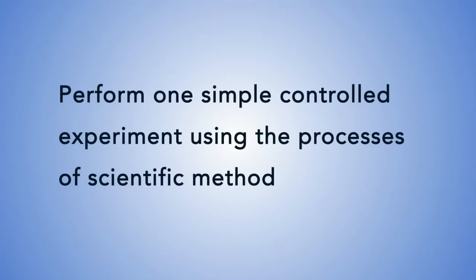Before we begin the experiment, let us look at the objectives for this lesson. After going through this lesson, you should be able to perform a simple controlled experiment using the processes of the scientific method. This experiment will involve the growth and development of maize seedlings.